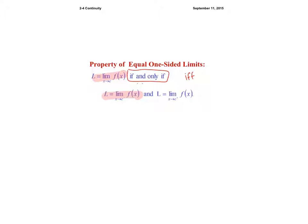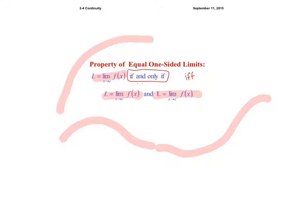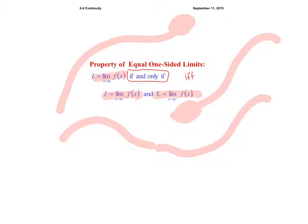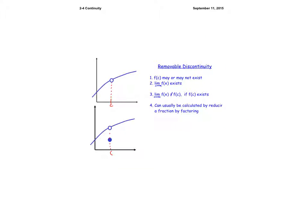A limit exists if the left-sided limit and the right-sided limit both approach the same point. For instance, if the left and right agree, the limit exists. But if the limit from the left side does not meet the limit from the right side, then the limit does not exist.